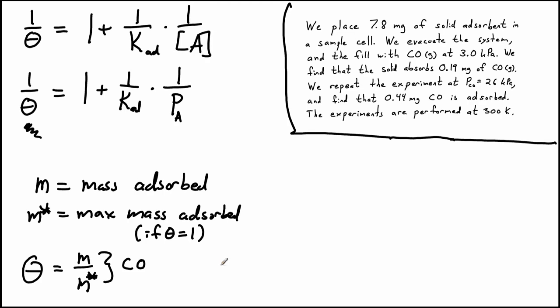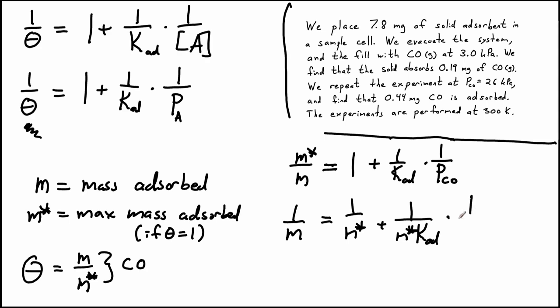So let's go ahead and plug those definitions in. We're going to replace theta with M over M star. And we don't know what M star is. But what we can do is divide both sides of the equation by M star. So now we have 1 over M is equal to 1 over M star plus 1 over M star times the equilibrium constant times 1 over the pressure of carbon monoxide.